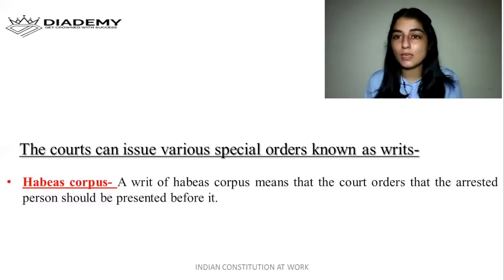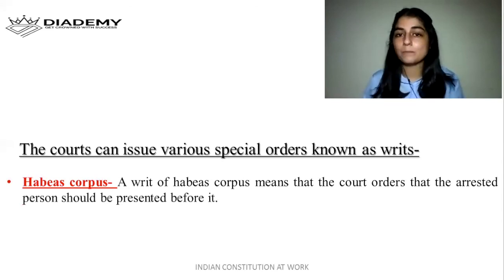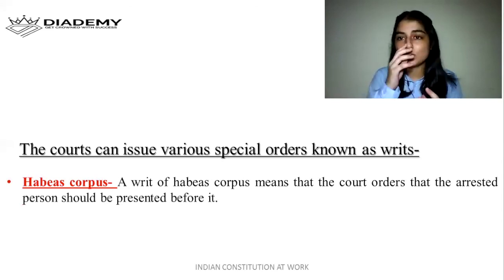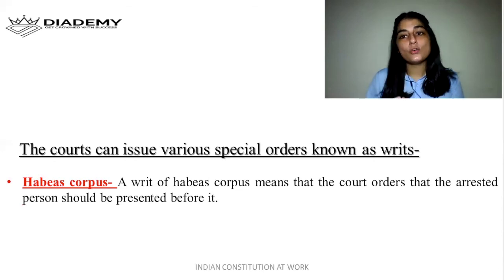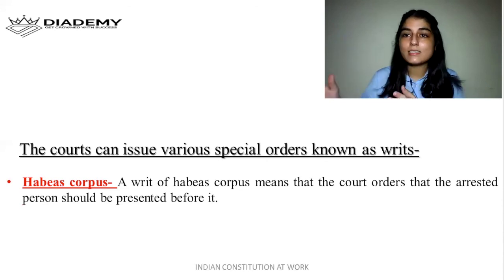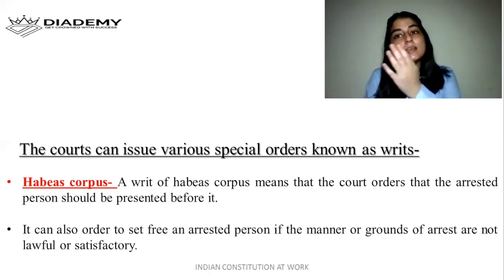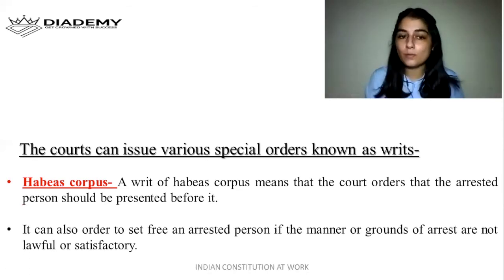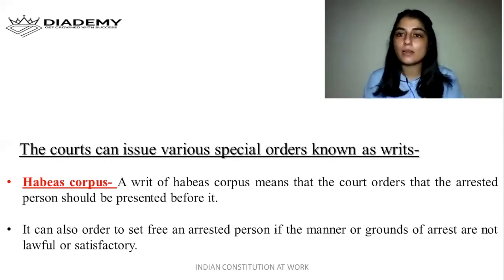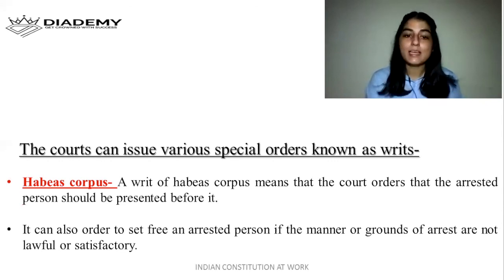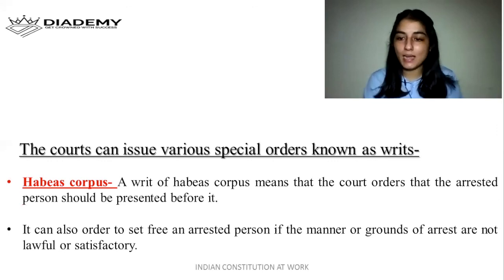The first writ is the writ of habeas corpus. The literal meaning of habeas corpus is 'produce the body.' In case any person has been illegally detained or illegally arrested, the court can issue a writ of habeas corpus and order that this person has to be brought before it. So if any person is arrested arbitrarily, the court can issue this writ.